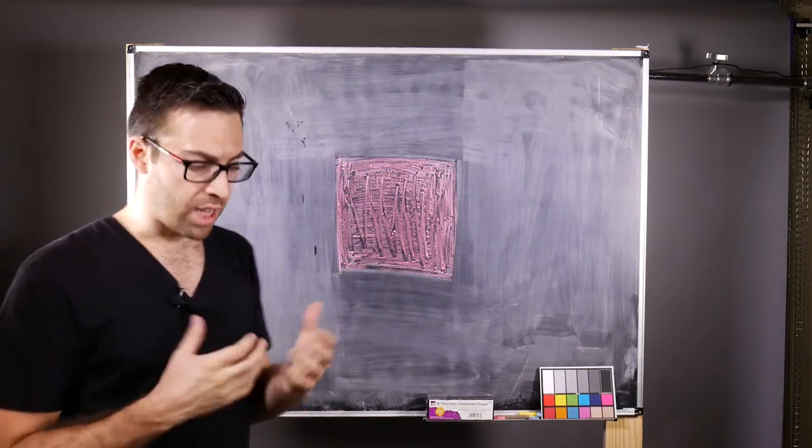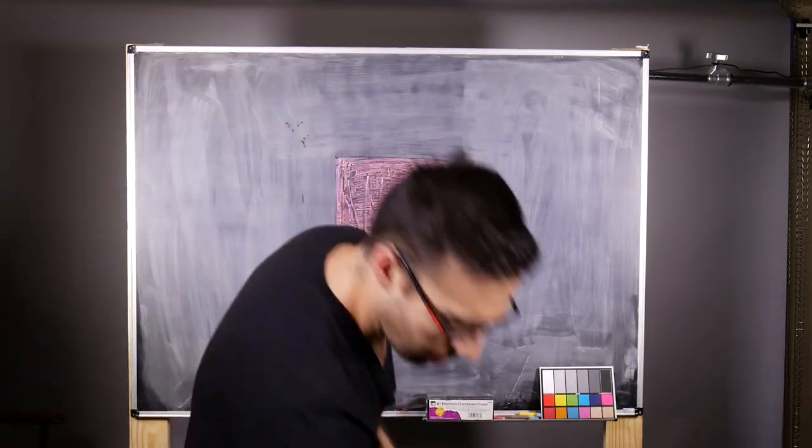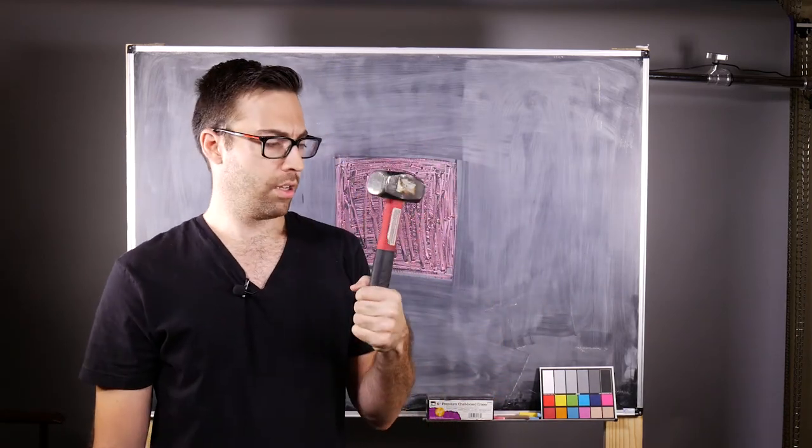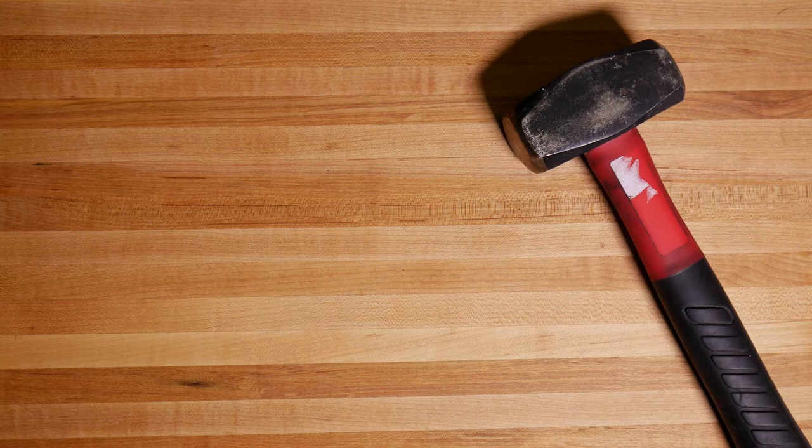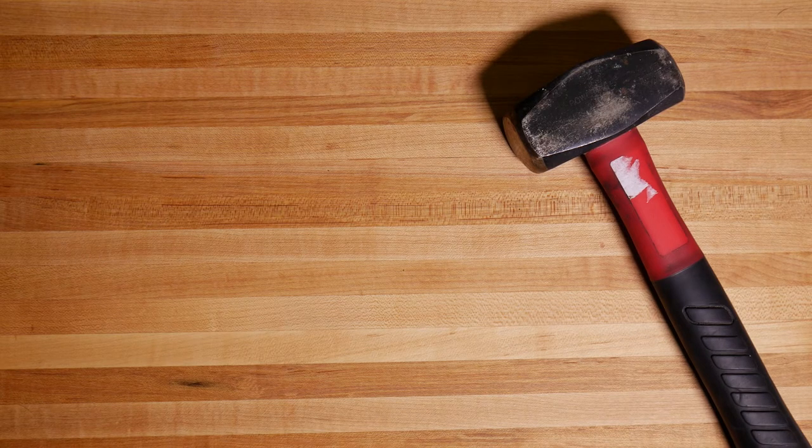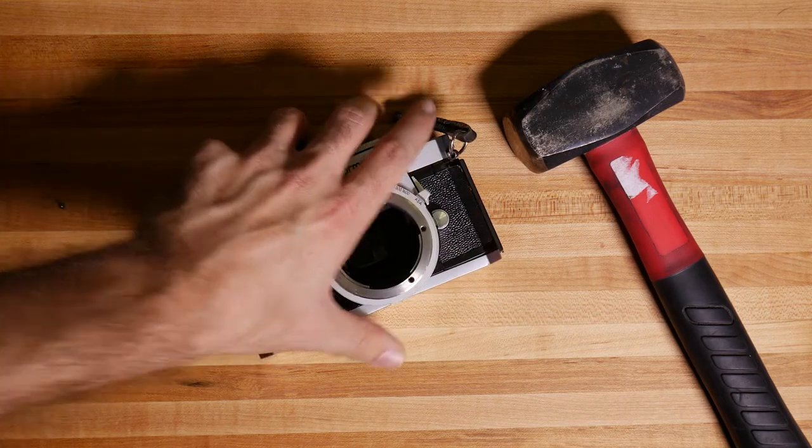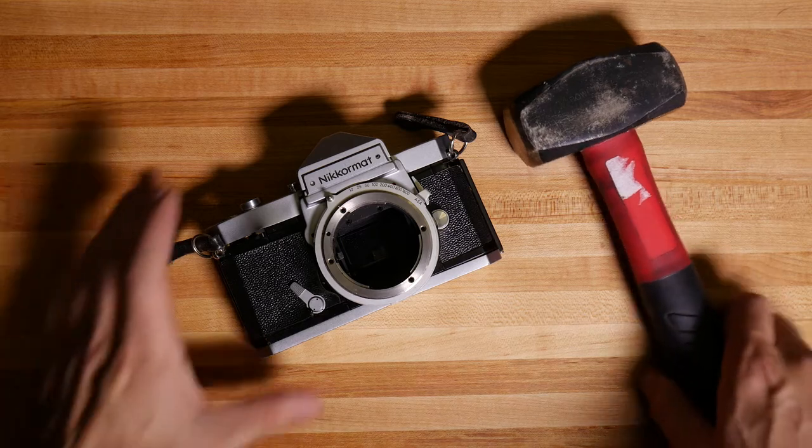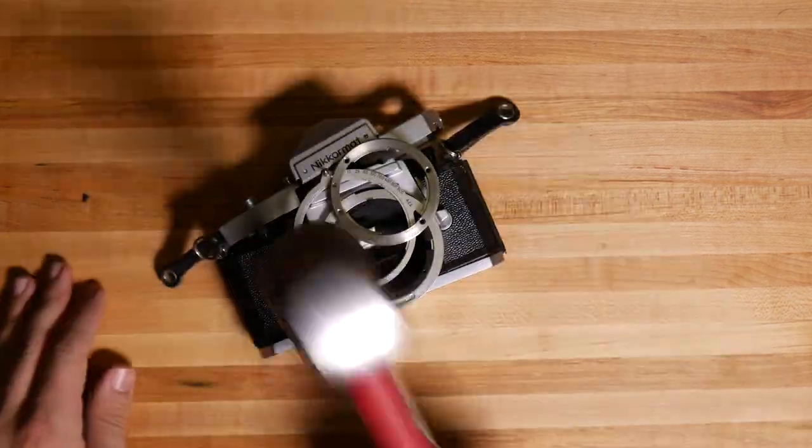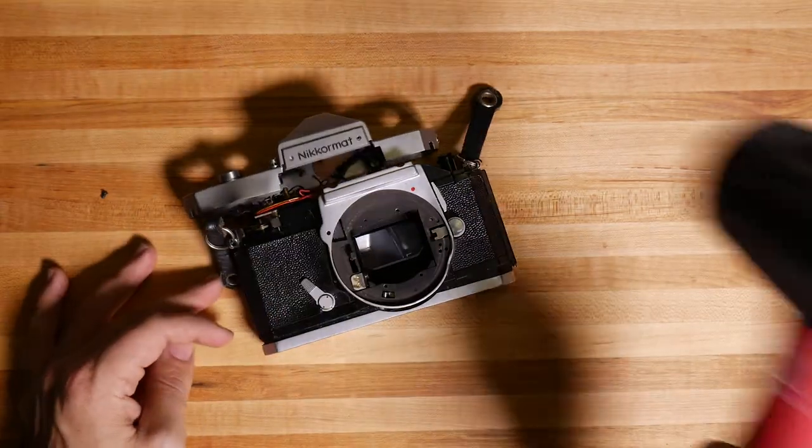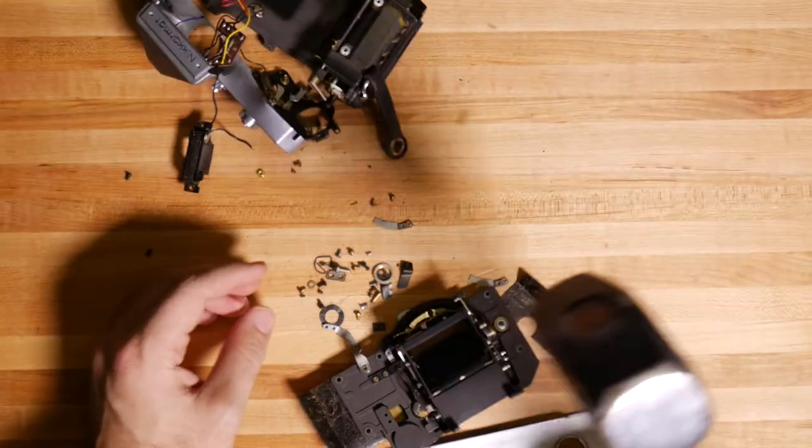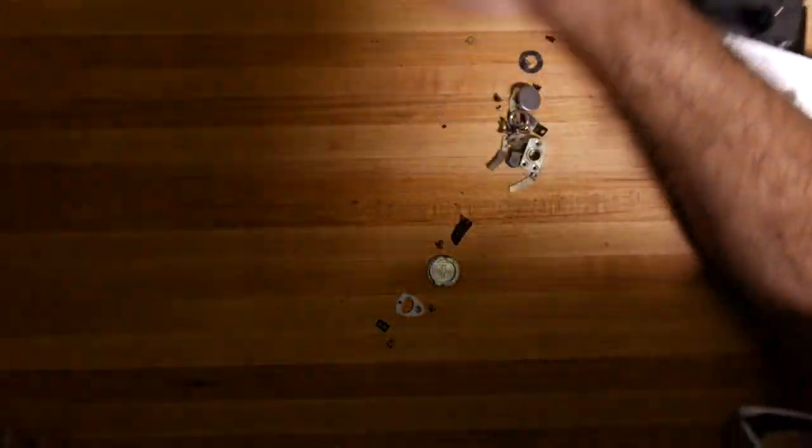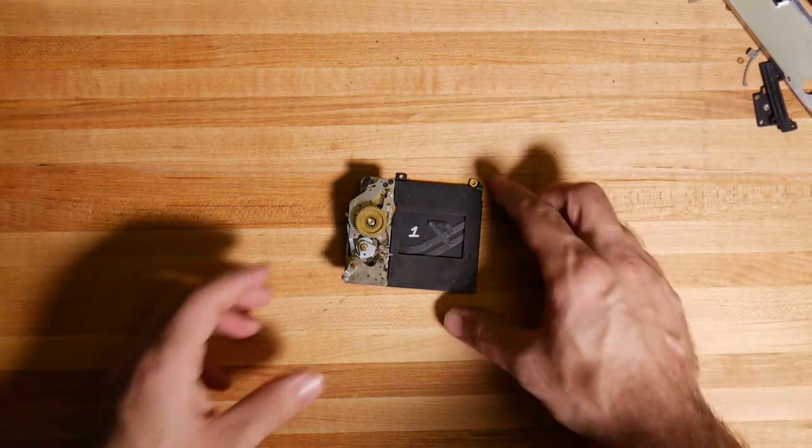So, I said that focal plane shutters are sort of integrated into the body of the camera, so in order to show you one, we're going to have to get a little, yeah, we're going to have to do some surgery. Alright, so like I said, the focal plane shutters are integrated into the camera, so to get a better look, we're going to have to do some slight modifications here. Alright, here we go. There it is. There is the shutter to this camera.